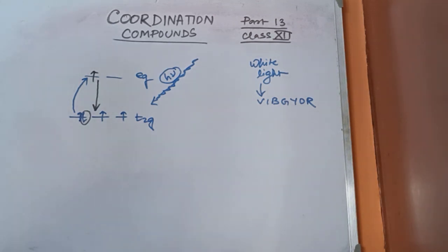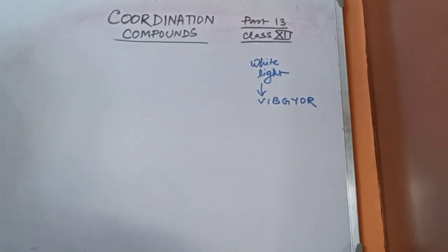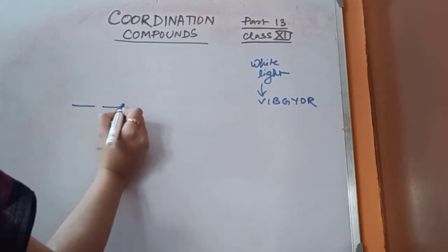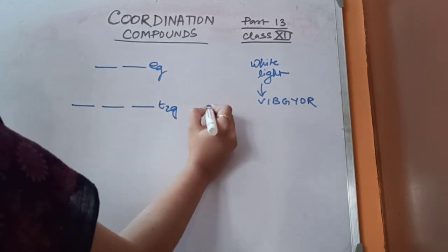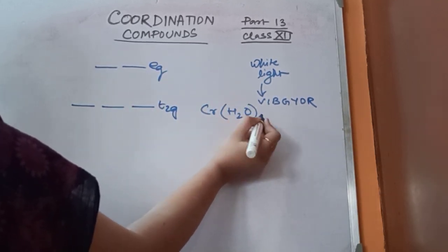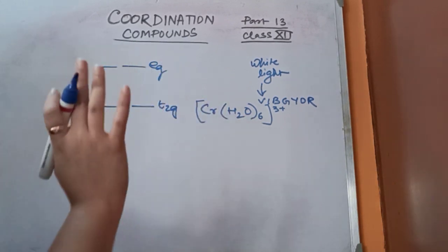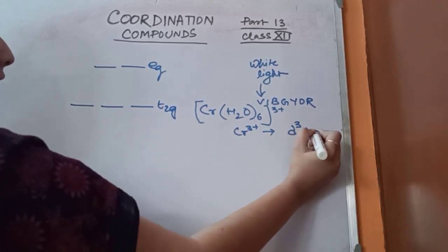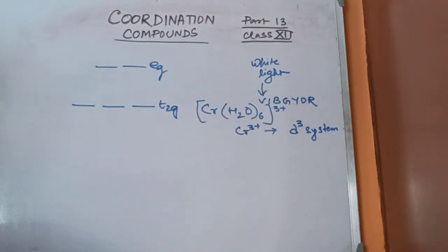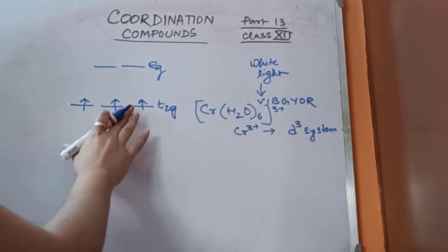Let's see this phenomenon with an example. I am considering the molecule [Cr(H₂O)₆]³⁺. Chromium³⁺ is a D3 system, so it has 3 electrons in the T2g set.